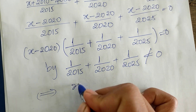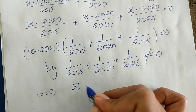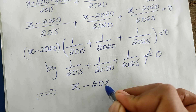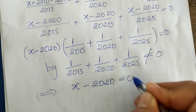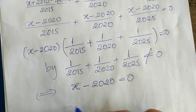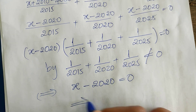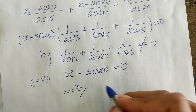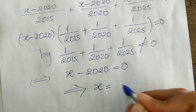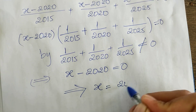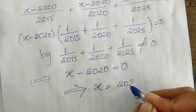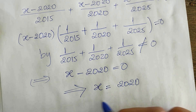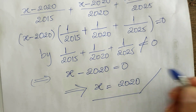So we get h minus 2020 equals 0. Therefore we can find the value of h: h equals 2020. That's our solution.